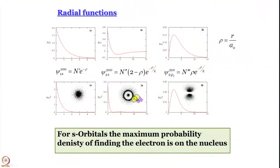We broke off at this point in the last module; now we will complete the discussion. We were in the middle of the question about probability density and actual probability. It is important to remember that ψψ* is really probability density — in this case, RR*. For s orbitals, maximum probability density of finding the electron is at the nucleus, but as we will see, probability is actually zero there.